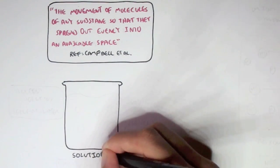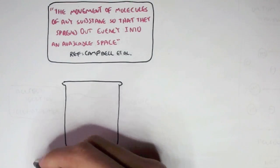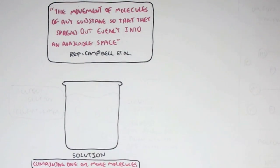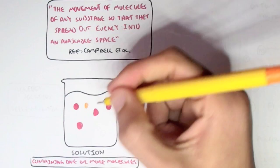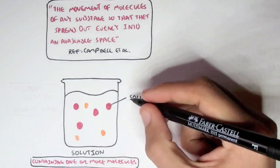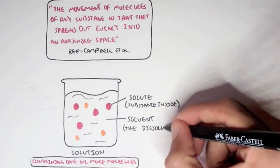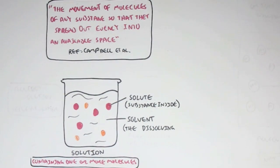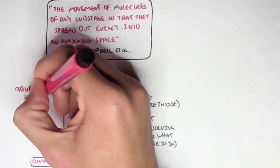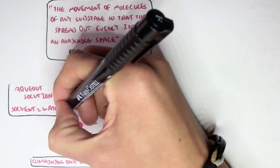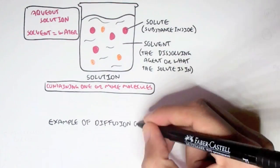For example, if we have a container containing a solution — a solution contains one or more molecules, that's what defines a solution. In a solution we have molecules, also known as solutes. And we have the solvent, which is the dissolving agent of the solute, or essentially what the solute is inside. This solution is an aqueous solution because the solvent is water.